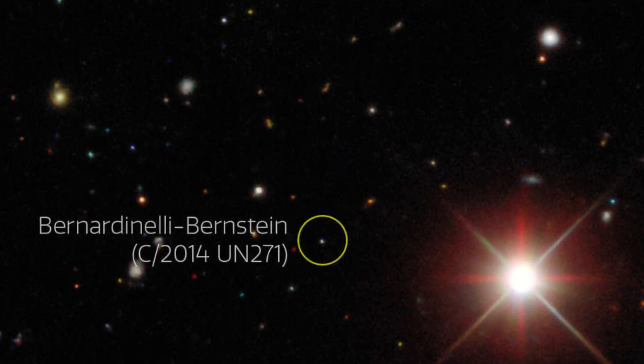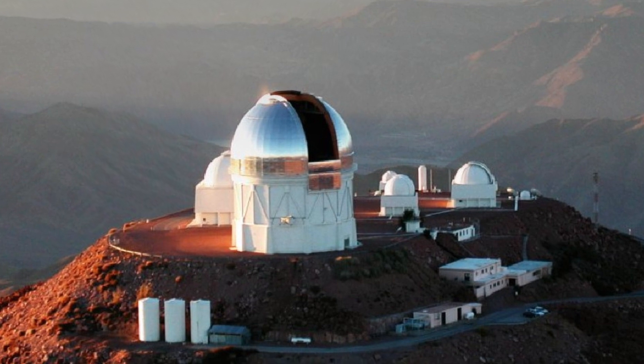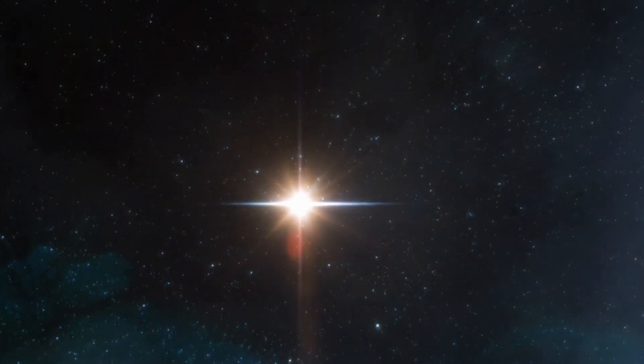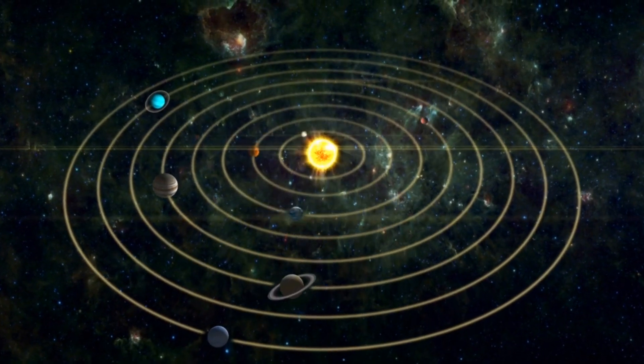Pedro Bernadinelli and Gary Bernstein identified the comet, C2014 UN271, using archived pictures from the Dark Energy Survey at the Cerro Tololo Inter-American Observatory in Chile. It was first discovered by accident in November 2010 when it was a staggering 3 billion miles from the sun, which is almost the distance to Neptune.